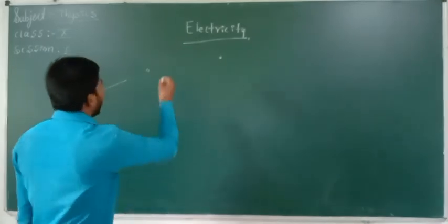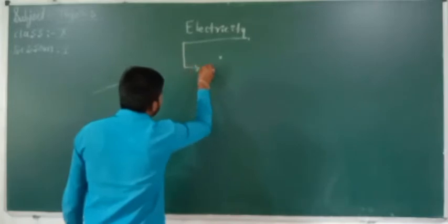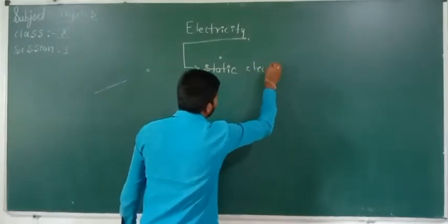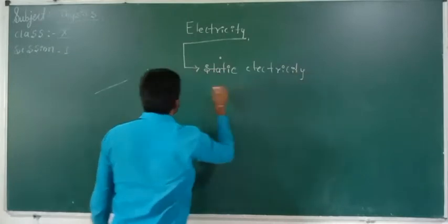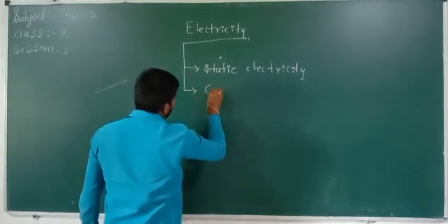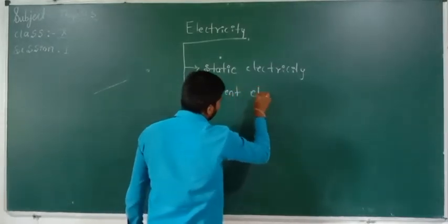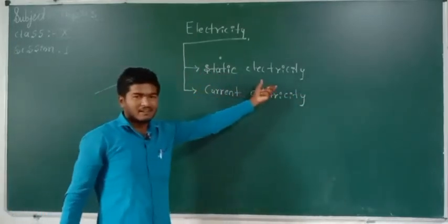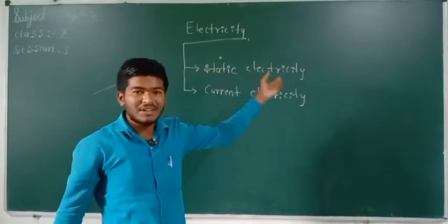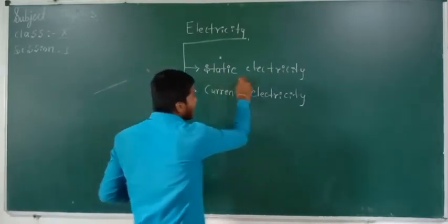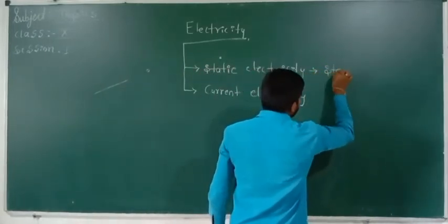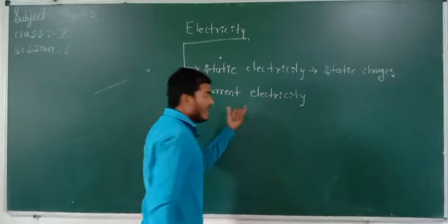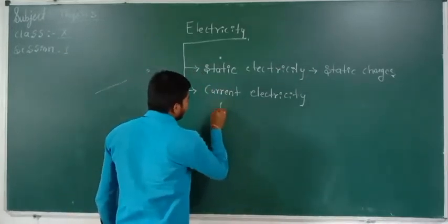Basically, electricity has two parts. One is static electricity, that is electrostatics, and the other one is current electricity. Static electricity deals with static charges — static means constant or stable. But current electricity deals with moving charges, that is the flow of charges.